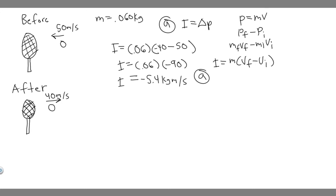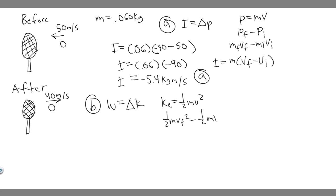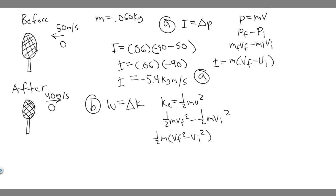Now for Part B: what work does the racket do on the ball? Work is equal to the change in kinetic energy. Kinetic energy is equal to ½mv², so the change in kinetic energy is ½mv_final² minus ½mv_initial². Factoring out ½m gives us: Work = ½m(v_final² − v_initial²). This is the formula we'll use to solve Part B.